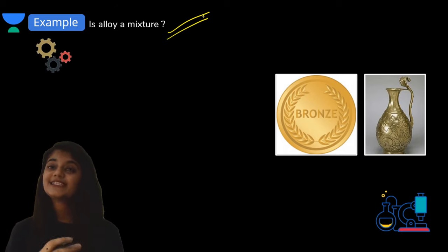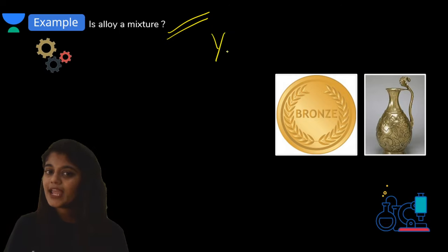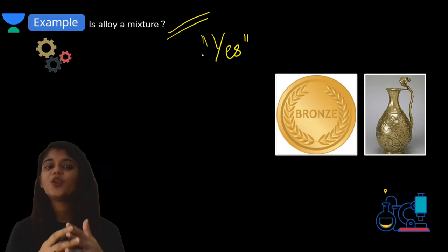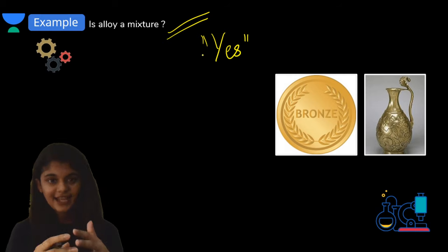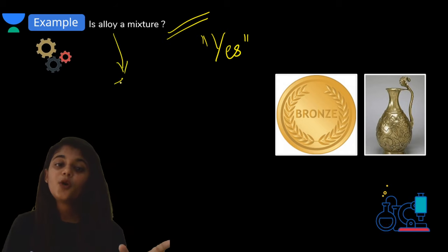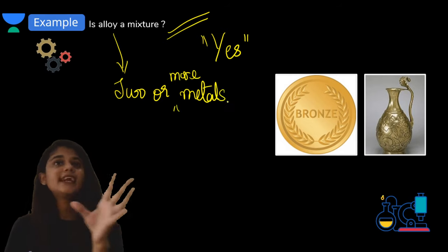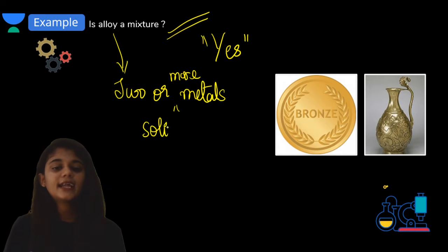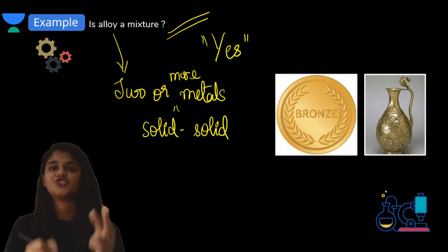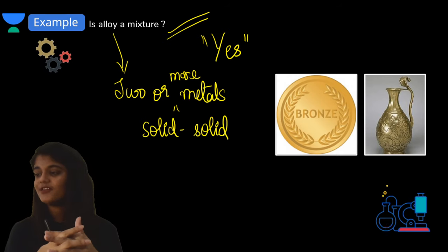Alloy is definitely an example of a mixture. Alloy is made up of two or more metals combined together. So it falls under the category of solid-solid mixture. Very good - it is also a homogeneous mixture.